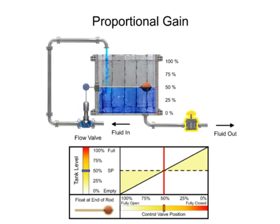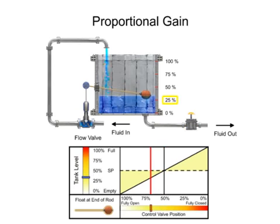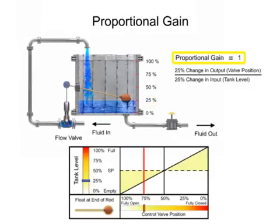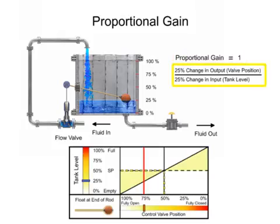Opening the drain valve increases the load demand, which causes the tank level to drop by 25%. The float drops and the valve opens 25%, which allows more fluid flow to enter the tank. A gain of 1 is demonstrated in this mechanism, since the 25% change of input or tank level results in a 25% change of output or valve position.